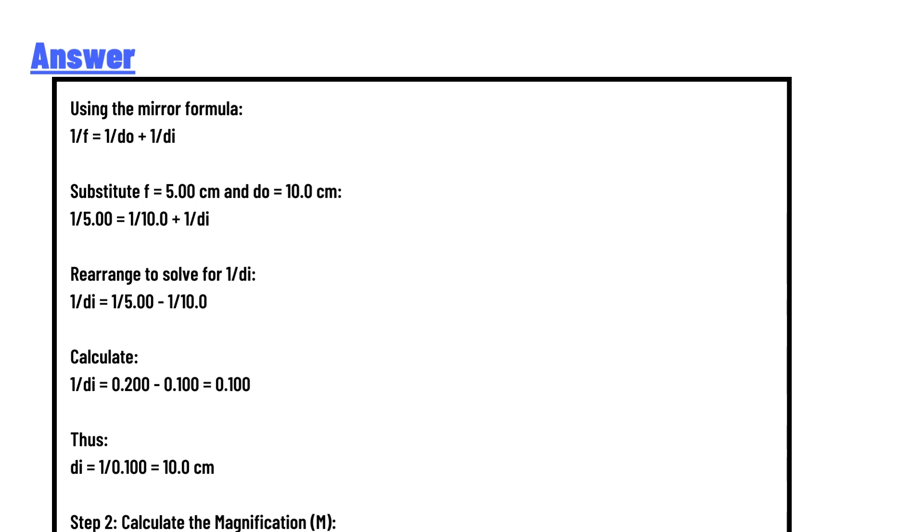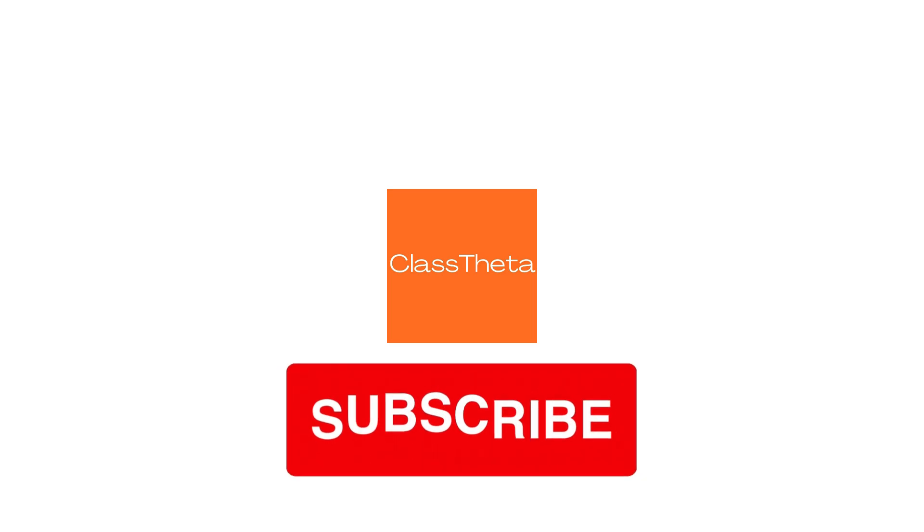Conclusion: The correct image distance and magnification are di = 10 cm and m = -1. So the correct answer is Option D: di = 10 cm and m = -1. This is the correct answer to the question.